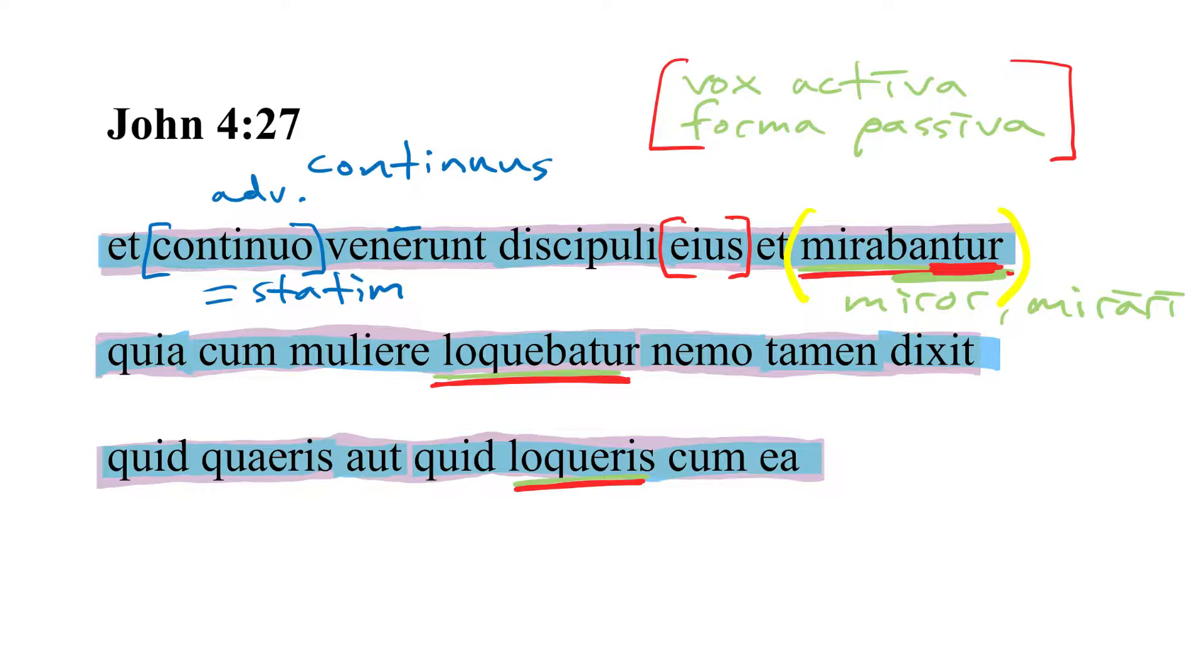Ntur is always going to be a telltale sign for us. So third person plural, passive in form, imperfect indicative. And the imperfect is signaled by this ba infix because this is a first conjugation verb. Mirabantur.